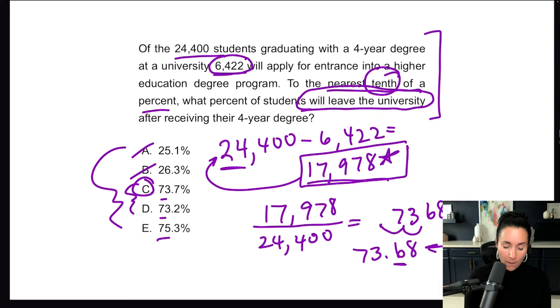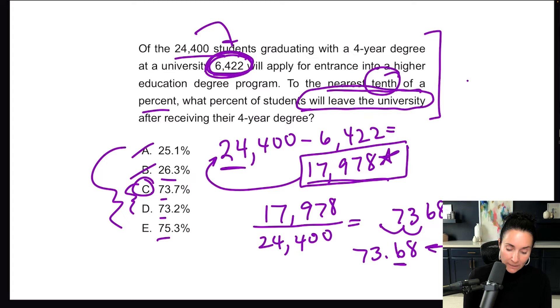Now, another trap with this problem, they want you to take this number here, 6,422, and divide that by 24,400. That would get you, I believe, 26.3%. Notice that the trap is in the answer choice and good math problems on standardized math exams will anticipate your mistakes. Remember, we have to read the entire question stem here. And when we do, we can see that we are looking for those who left. 6,422 stayed, 17,978 left after getting their four year degree. So be careful with that, that question stem that last sentence in the word problem is going to help you distinguish between those two.